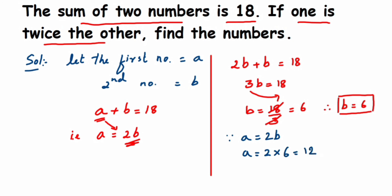Now we got, therefore a is equal to 12 and b is equal to 6, and 12 plus 6 is equal to 18. So that's it, this is the answer.